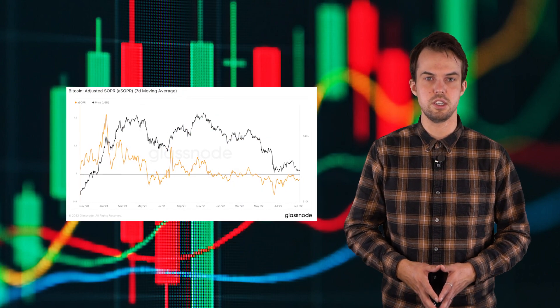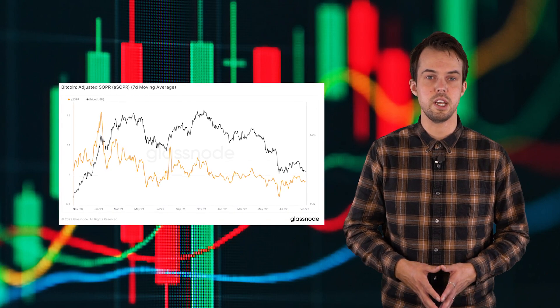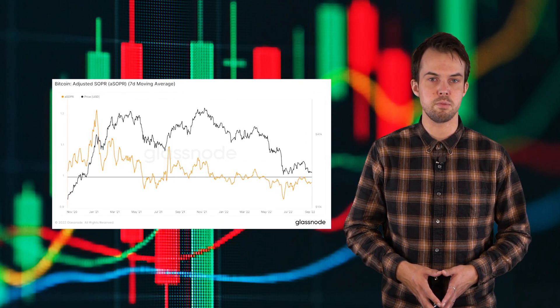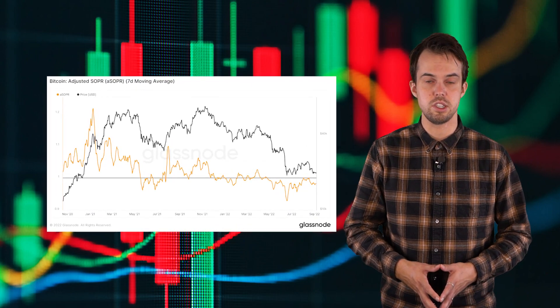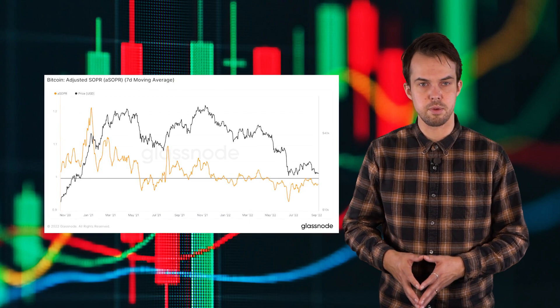A bull market can only start when the break-even sentiment changes. This is represented by the aSOPR indicator, where investors above 1 — the black line — change from 'sell the rally' to 'buy the dip.' With the above data points we have already been able to analyze that market sentiment is determined by short-term holders exiting the market while the conviction of long-term holders keeps growing. The network effects are also increasing, which play out in the long term, and we see an undervalued but healthy system.